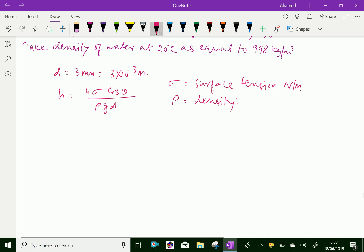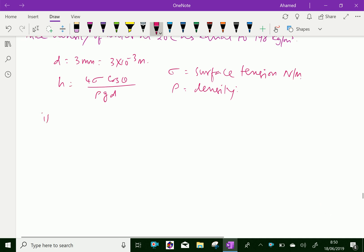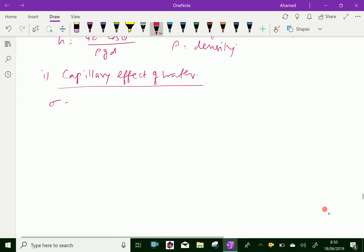First, we will do capillary effect for water. Here are the given things: sigma equal to 0.073575 Newton per meter, as well as theta equal to 0 degree.